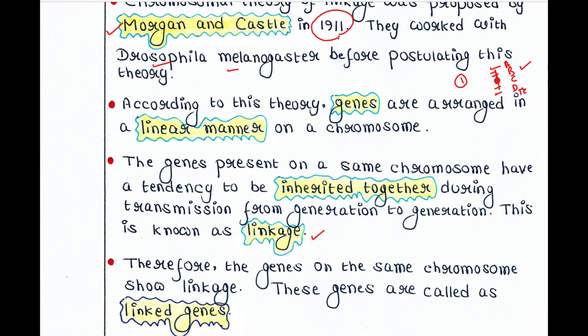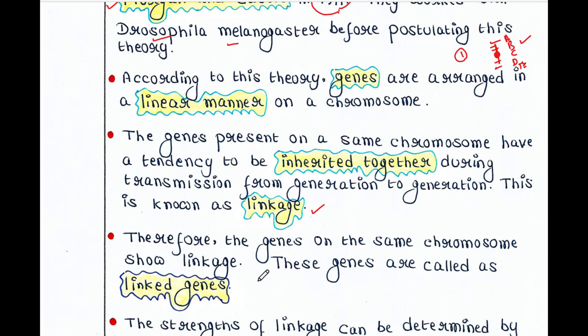These genes are called linked genes. We can say that genes A, B, C, D, E — these 5 genes are linked genes. Since these 5 genes are placed on chromosome number 1, they will be transmitted to offspring in the same pattern or in the same manner.